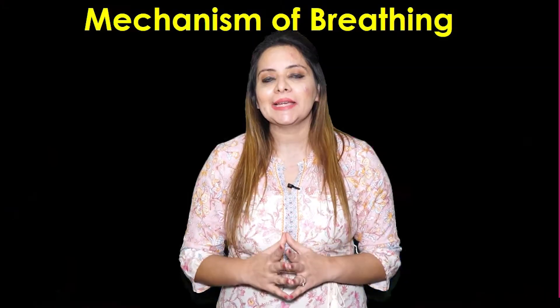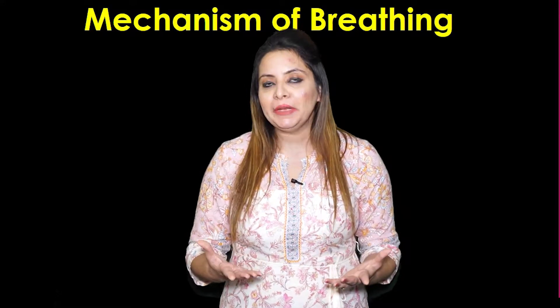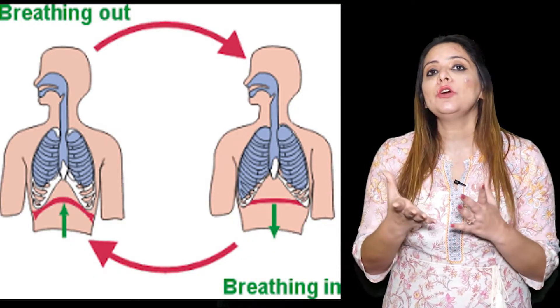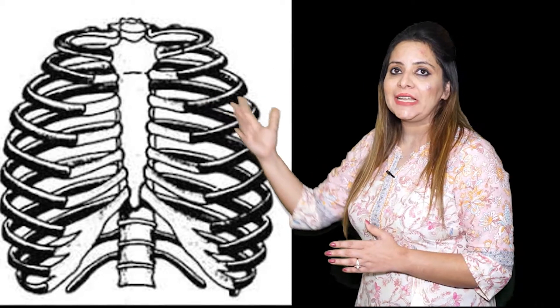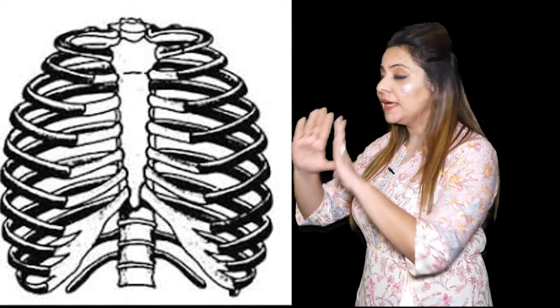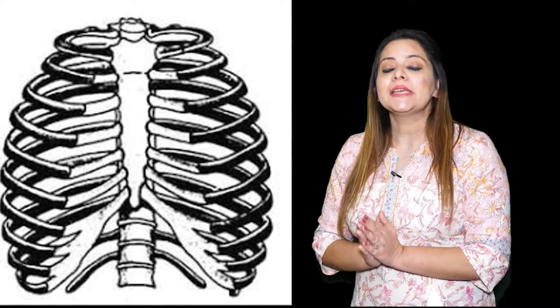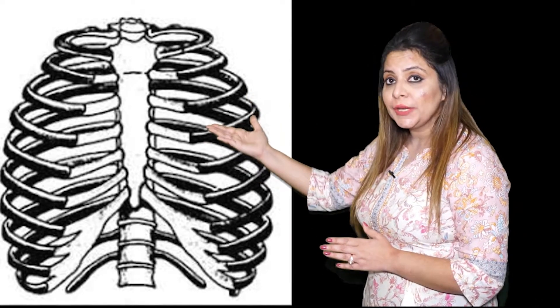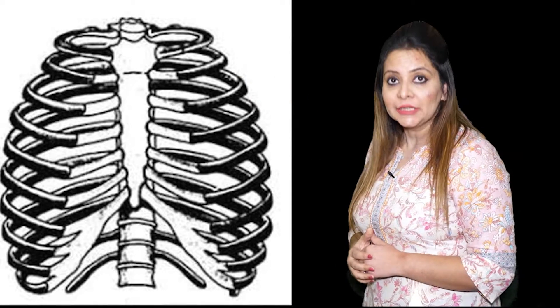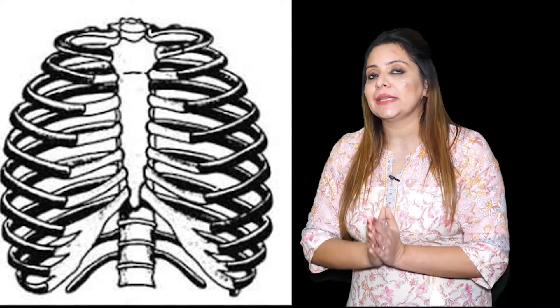Now let's study the mechanism of breathing — the intake of oxygen and giving out of CO₂. The chest area contains a cage-like structure called the thoracic cavity, formed by the ribs, the dome-shaped diaphragm, and the backbone. The diaphragm is a membrane that separates the lungs from the abdominal cavity. The ribs, diaphragm, backbone, and abdominal muscles are all involved in breathing.